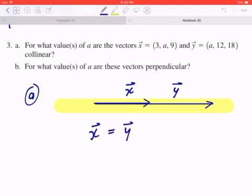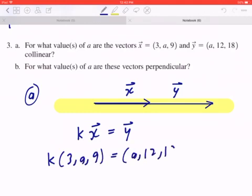The k value could be on the left or on the right. I'm going to put it on the left, because when you look at the numbers, you will realize that (3, a, 9) is x, (a, 12, 18) is on the right, so you have to multiply the first vector by 2 to get to the second one.